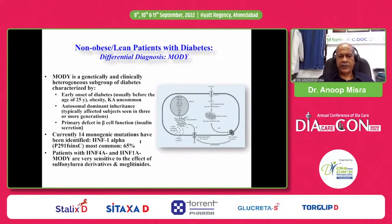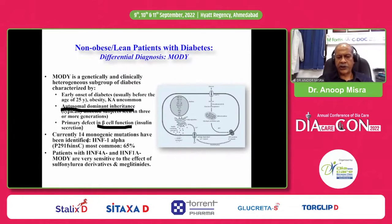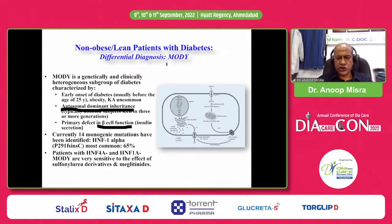MODY is a huge subject by itself, but briefly it is a genetically and clinically heterogeneous subgroup of diabetes characterized by early onset, usually before 25 years. Obesity and ketosis are uncommon. Autosomal dominant is the most important inheritance, and primary defect is in beta cell function. 14 monogenic mutations have been identified, of which HNF1-alpha is the most common. HNF1-alpha subtype and HNF4A subtype are very sensitive to sulfonylurea. Some of our patients treated as type 2 diabetes may belong to this diagnostic category.